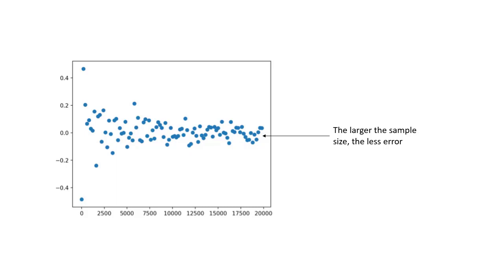In our example, we have a plot that compares the size of the sample to the error of the sample mean from a population mean. Generally, you can see the larger samples have less error, which is what we expect from the law of large numbers.